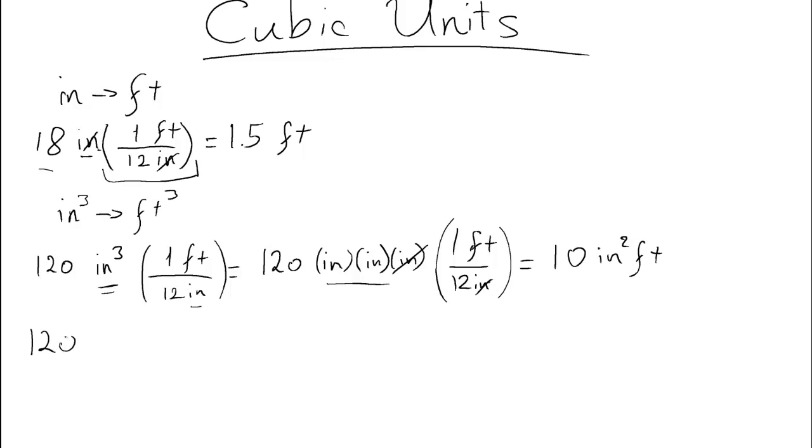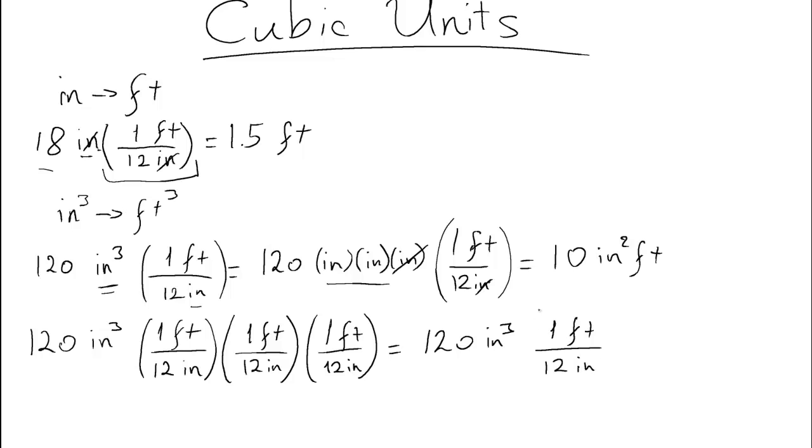Basically, the way we do that is we can rewrite it here as the cubic unit, and then we take the conversion factor we know, which is that 12 inches equals a foot, and we do that three times. The second time here, and then we multiply again, one foot over 12 inches, and we can basically summarize that by restating it as 120 cubic inches, and then our conversion factor, and that entire factor is cubed, because our original unit was also cubed.